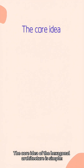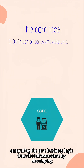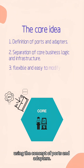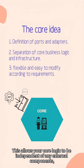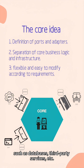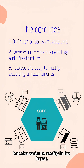The core idea of the hexagonal architecture is simple: separating the core business logic from the infrastructure by developing using the concept of ports and adapters. This allows your core logic to be independent of any external components, such as databases, third-party services, etc. A system designed in this way is not only flexible, but also easier to modify in the future.